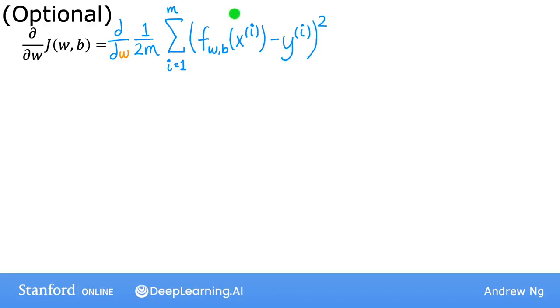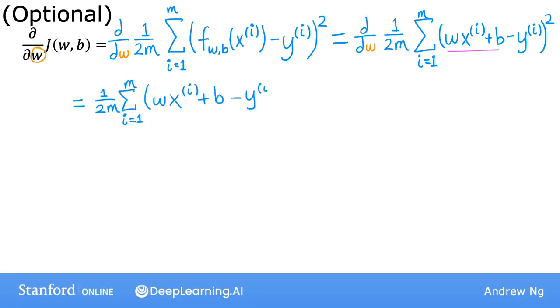And now remember also that f of w,b of x(i) is equal to this term over here, which is wx(i) plus b. And so what we would like to do is compute the derivative, also called the partial derivative with respect to w of this equation right here on the right. If you've taken a calculus class before, and again, it's totally fine if you haven't, you may know that by the rules of calculus, the derivative is equal to this term over here, which is why the 2 here and the 2 here cancel out, leaving us with this equation that you saw on the previous slide.